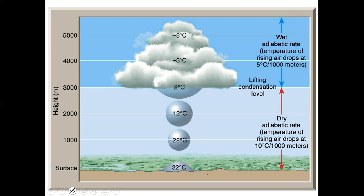This illustrates adiabatic heating and cooling again. Air is rising unsaturated at the dry adiabatic rate — 10 degrees Celsius per 1,000 meters. At 3,000 meters is the lifting condensation level, where the dew point temperature is 2 degrees Celsius. From that point on, it cools at the wet adiabatic rate because condensation has taken place, and condensation is a warming process.